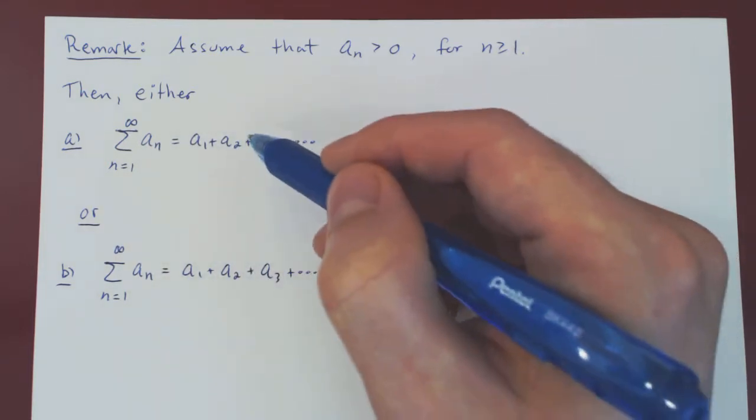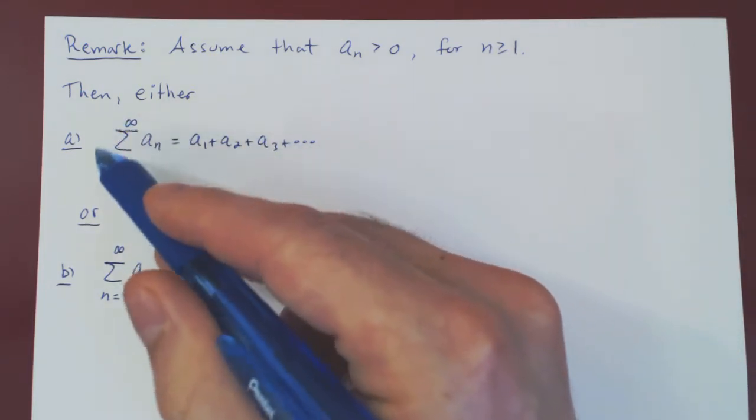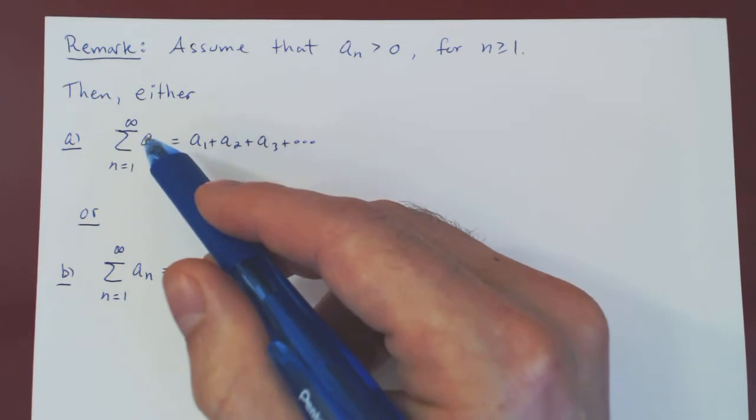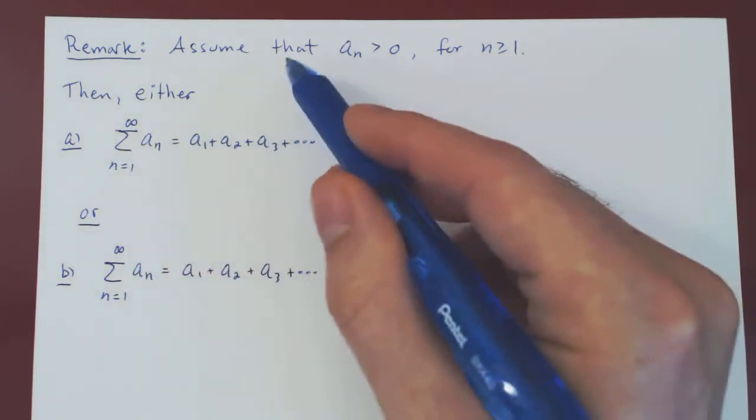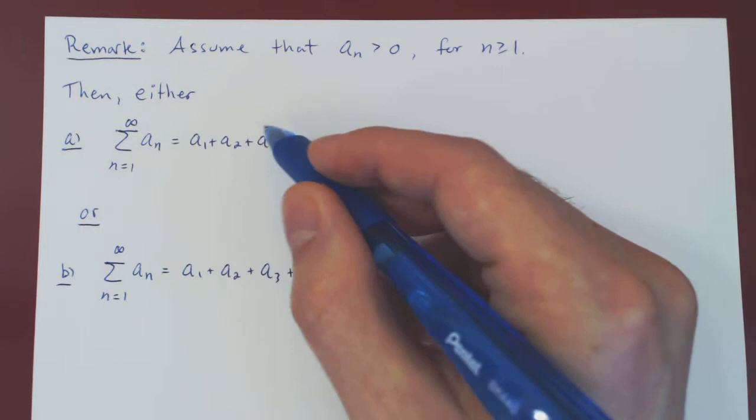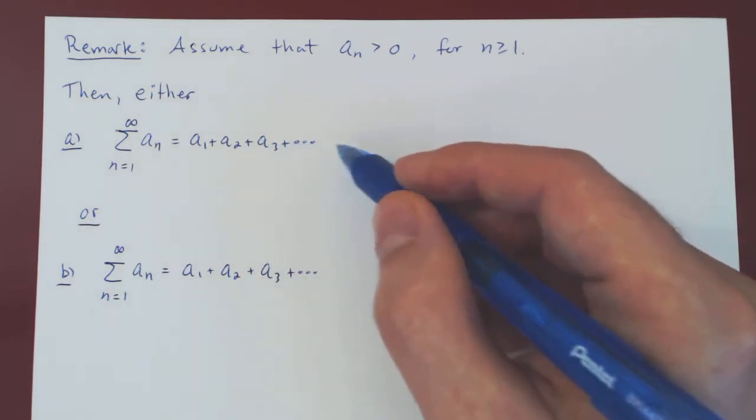Before we state the two possibilities, let's look at one key observation. So we have the series of terms of our sequence: a1 plus a2 plus a3 plus a4 and so forth.